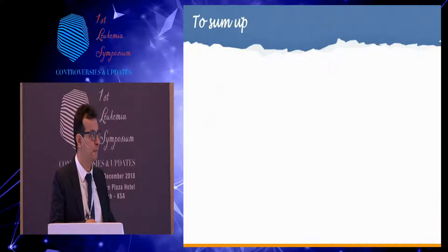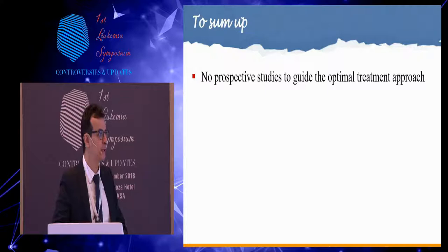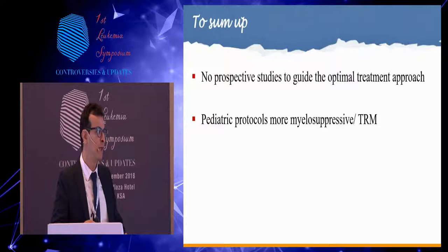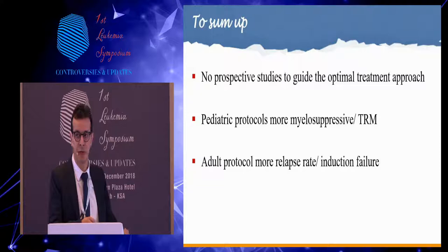To summarize: there are no prospective studies to guide the optimal treatment approach. The pediatric protocol, although showing some promise with better overall survival, comes with a lot of TRM, so if it is used, very aggressive supportive care must be implemented. The adult protocol, although less intense, comes with an increased relapse rate and induction failure.